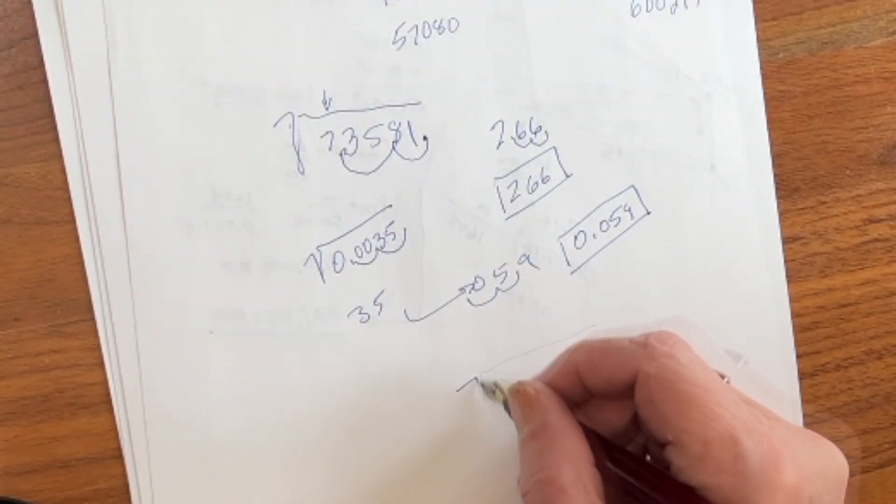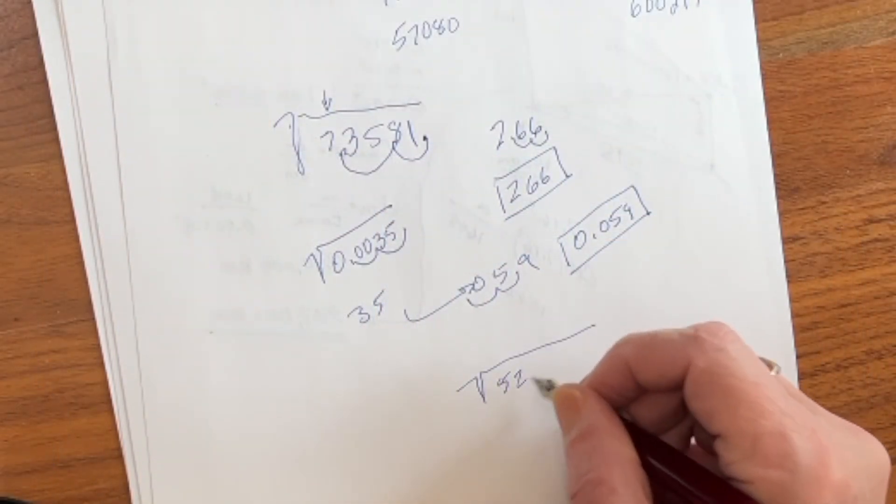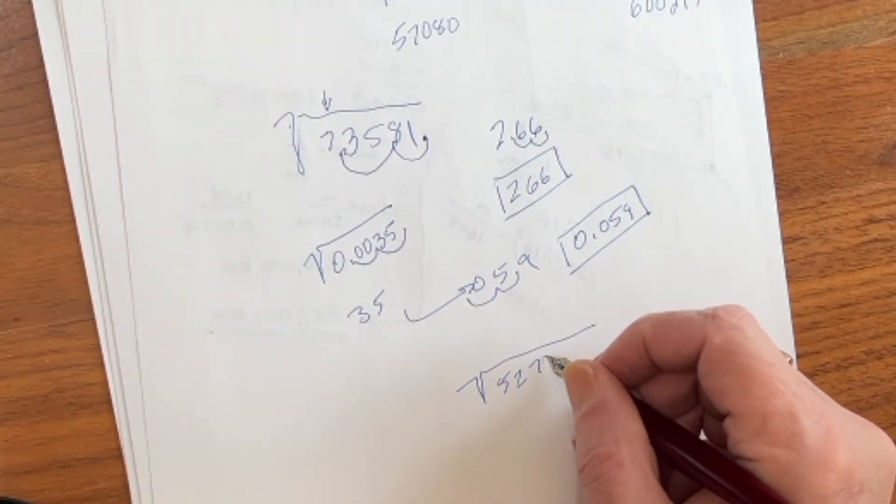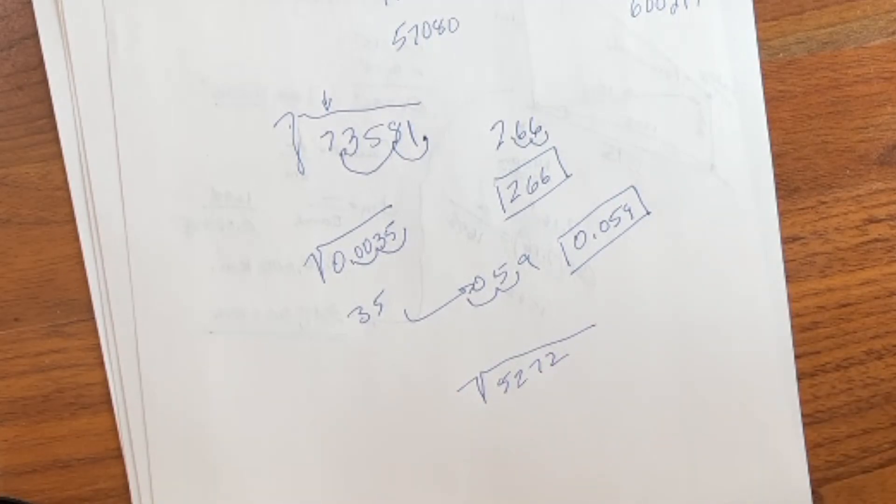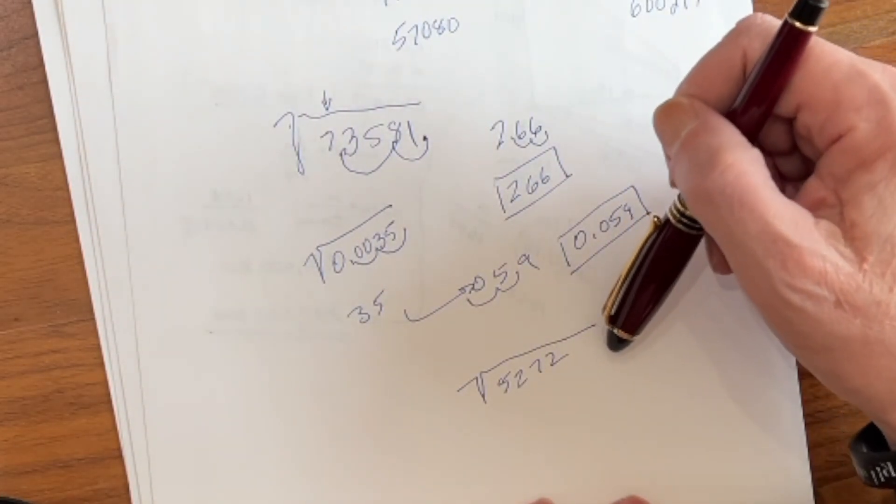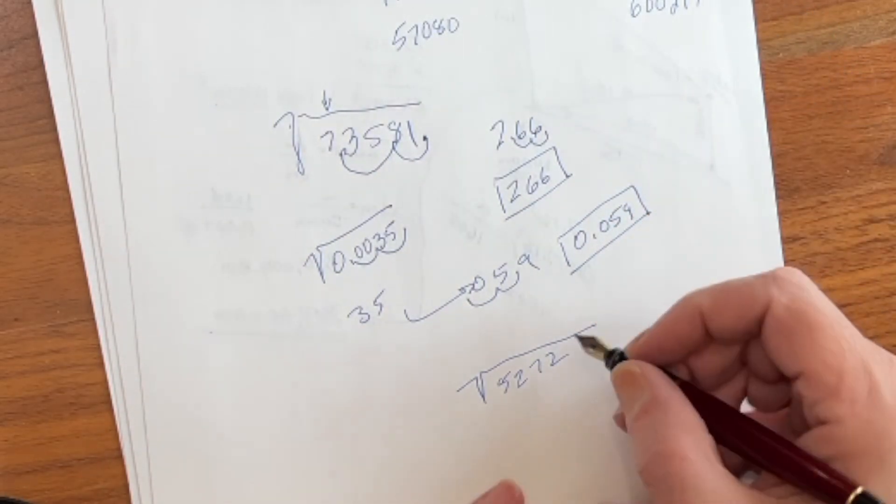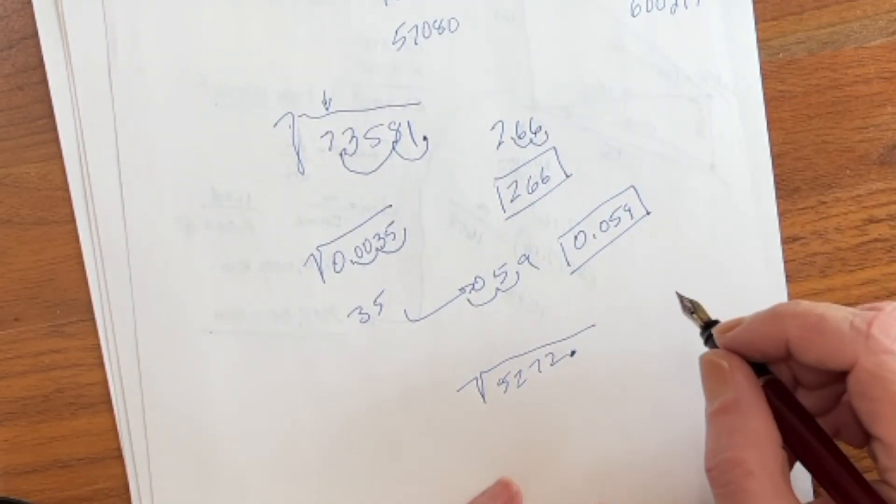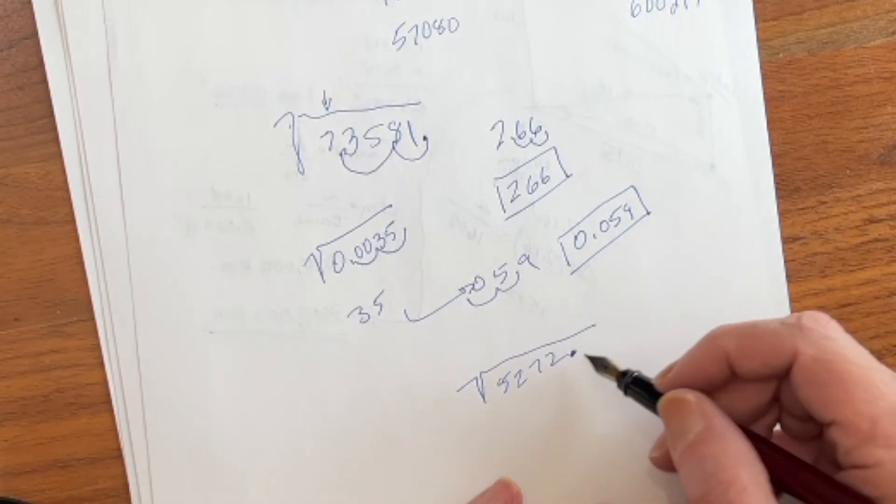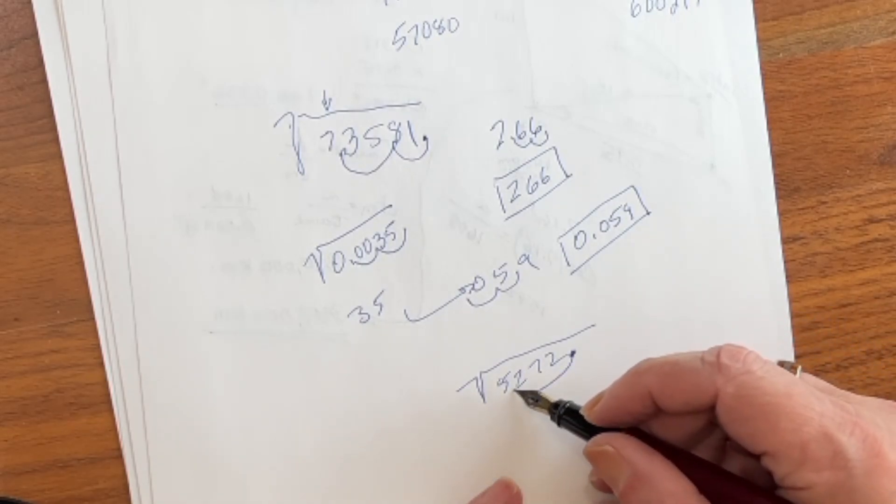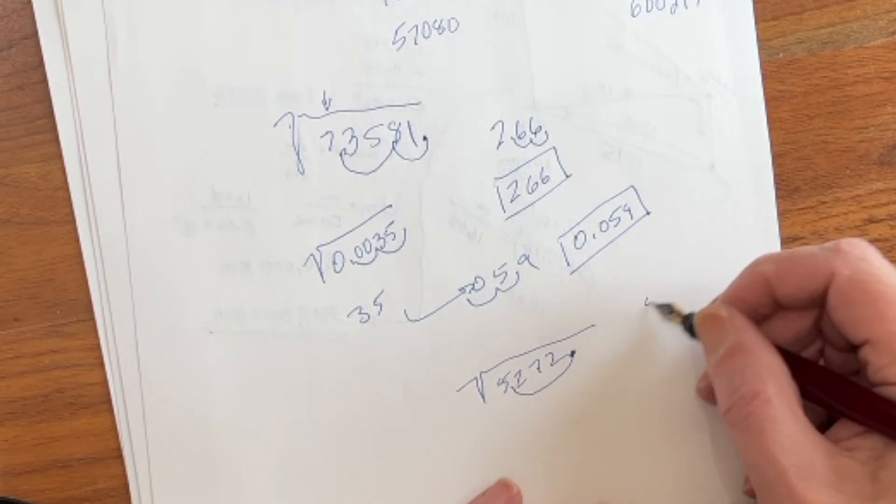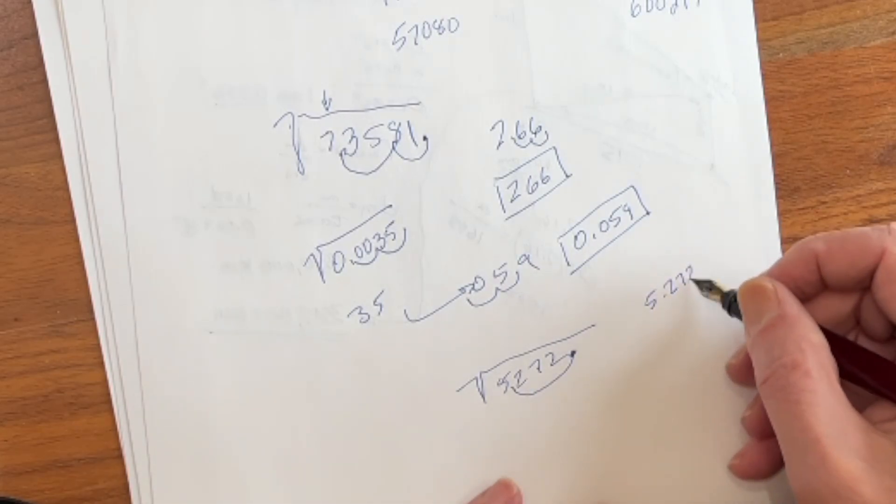Let's go ahead and just touch on cube roots real quick. Now, if we want to find the cube root of 5,272, how would we do that? Well, what we want to do is we want to come up with a number that is between one and a thousand. And to do that, we're going to do the same thing. We're just going to move the decimal place. The only difference is, we have to move it three at a time. So one, two, three. So we're going to find the cube root of 5.272.